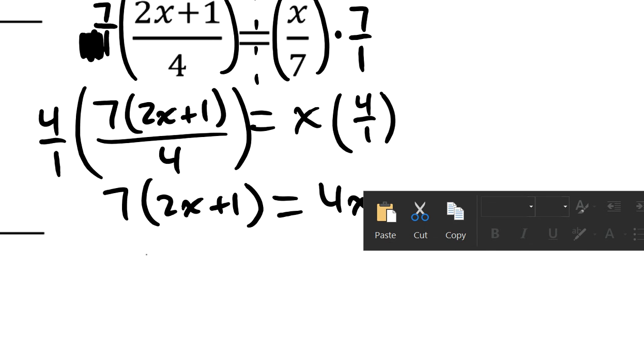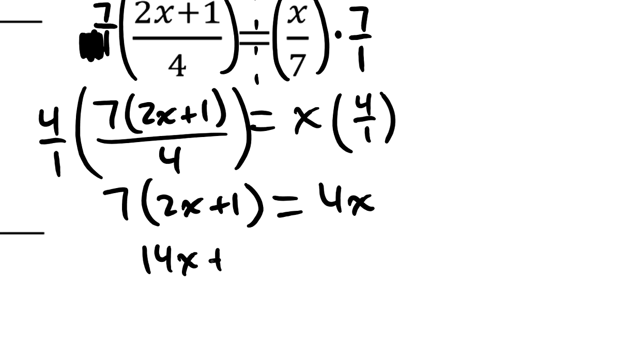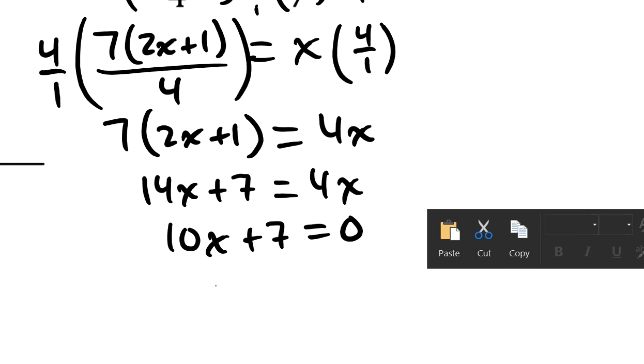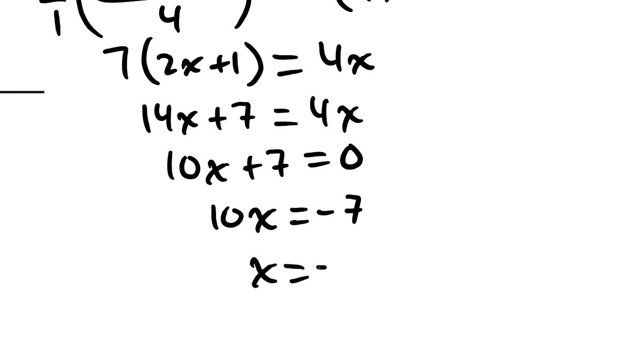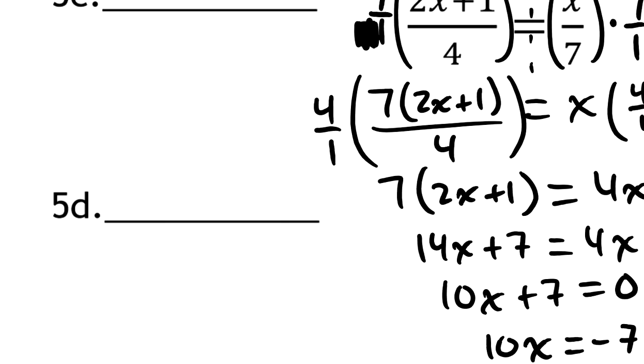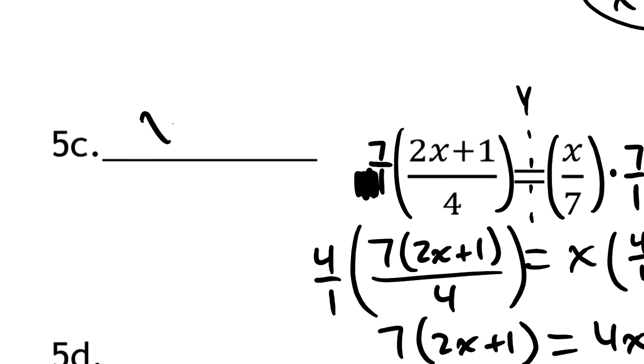Over on the left-hand side, we have 14x plus 7, and that equals 4x. If I take away 4x's from each side, that gives me that 10x plus 7. This side is not gone. It's equal to 0 at this point. And then I'm going to subtract 7. So 10x is negative 7. And then finally, x must be equal to negative 7 tenths. That's a beautiful answer, negative 7 tenths. x is negative 7 tenths.